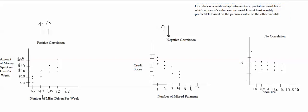Let's say that a person has told me how many miles they drive per week, but they haven't told me how much money they spend on gas per week. Since a person has told me how many miles they drive per week, I can make at least a rough prediction about how much money they're spending on gas per week. If the person tells me they're driving five miles per week, I'll probably think that person probably isn't spending very much money on gas.